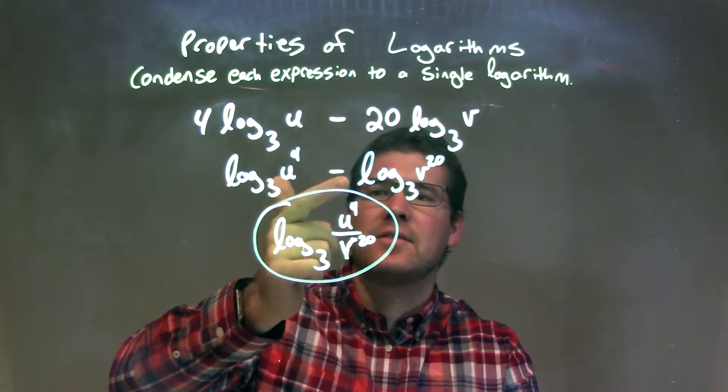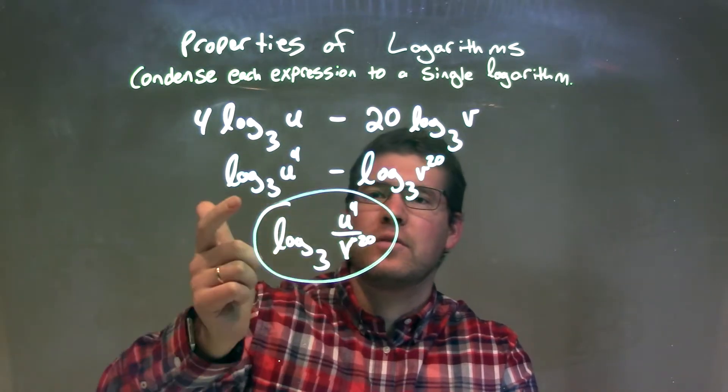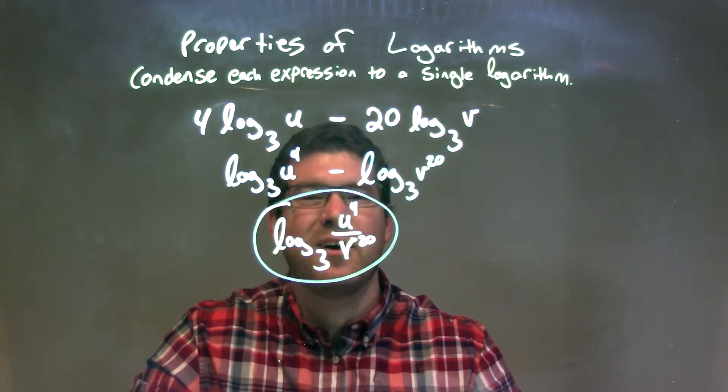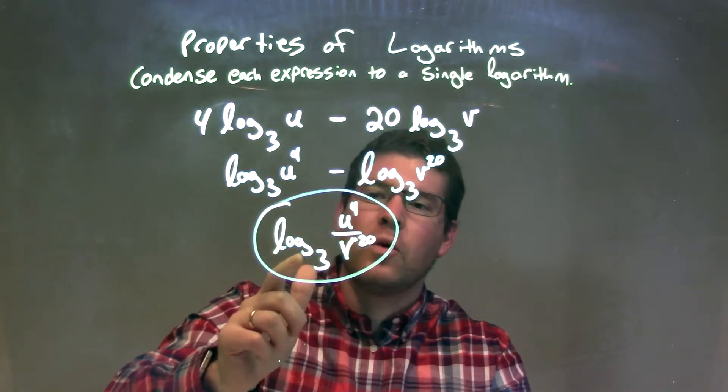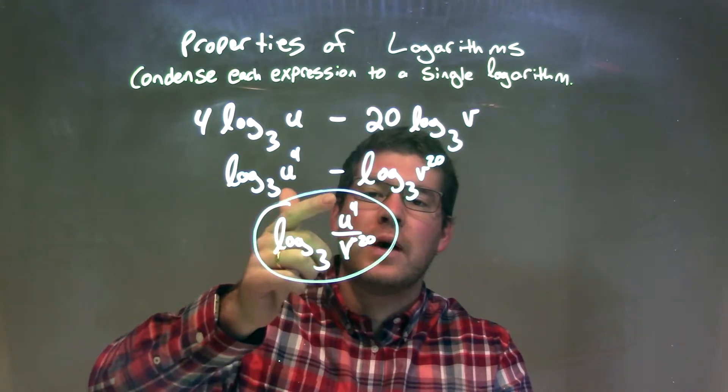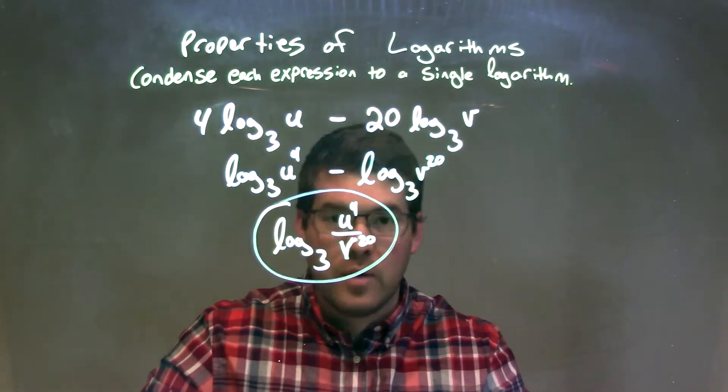And when I condense it, I see we have the same base, log base 3 for both of them. We have subtraction going between. When I condense that, it becomes a division. So when you rewrite this as one log base 3, we can take log base 3 of u to the 4th power divided by v to the 20th power.